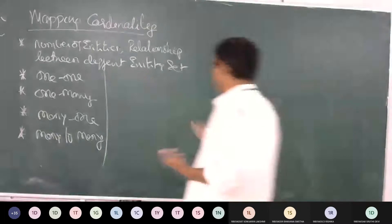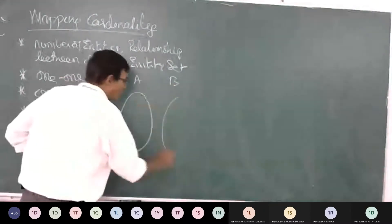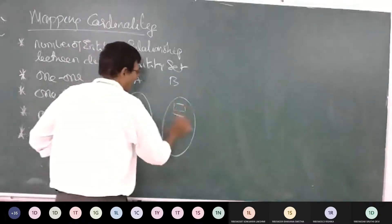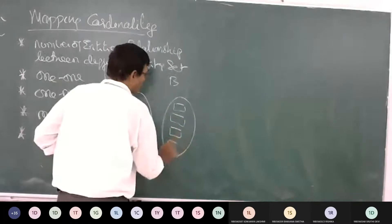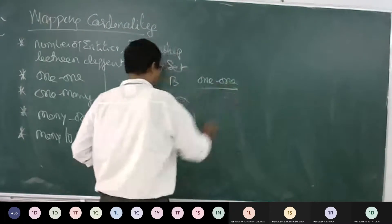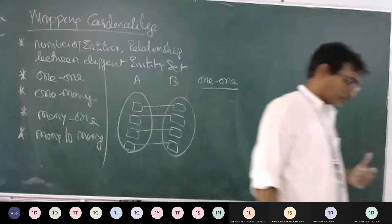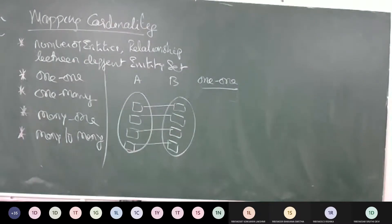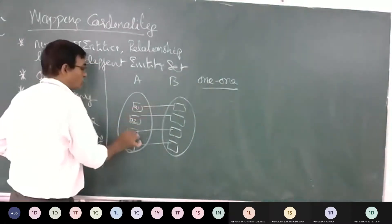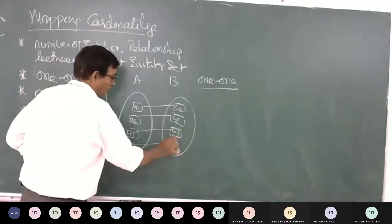For one-to-one mapping: we take sets A and B, with instances A1, A2, A3, A4 in set A and B1, B2, B3, B4 in set B. We map items between one entity set and another entity set in a one-to-one manner — each item in A maps to exactly one item in B.